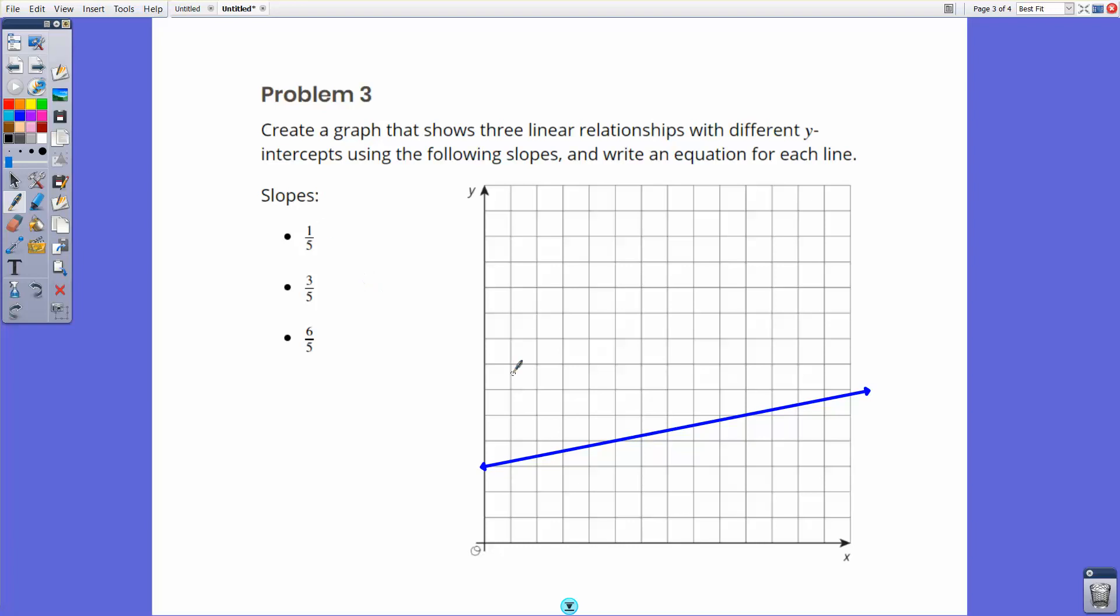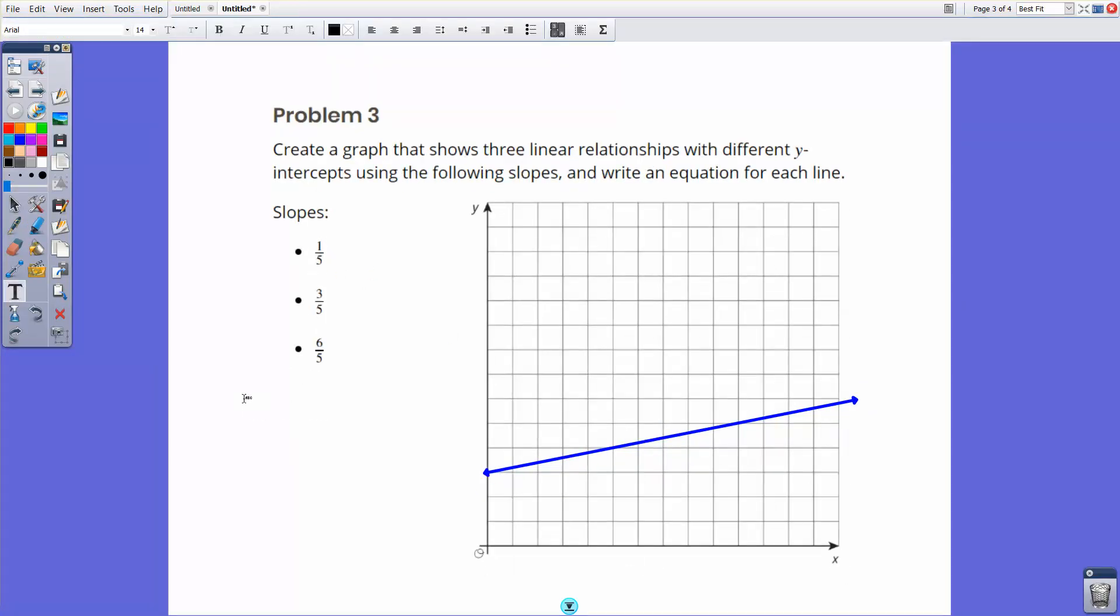Now, once you get that line onto your grid, the last thing you need to do is write the equation for that line. So since the slope is already given to us, and remember all of the equations are in the same format, in this case y equals mx plus b. So all you need to do is identify what slope you're using, which I just used one fifth, and where is the y-intercept that you just used. So for this particular equation, this line, this line is y equals one fifth of x plus three. And that would be all you need to do.